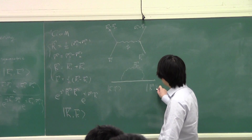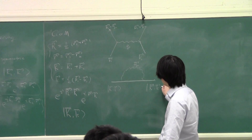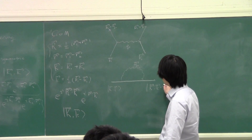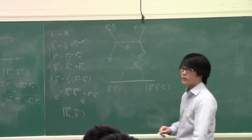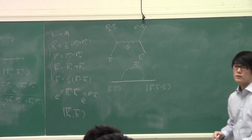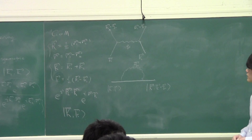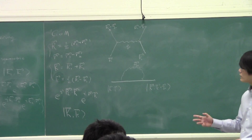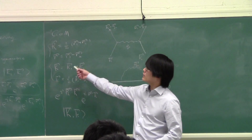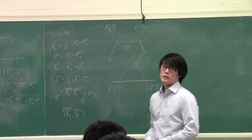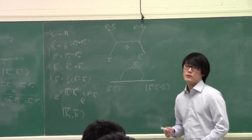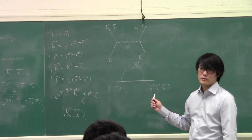What changes is the relative momentum — it goes to k + Q. In this representation, what should be preserved is the center of mass momentum, not the relative momentum.